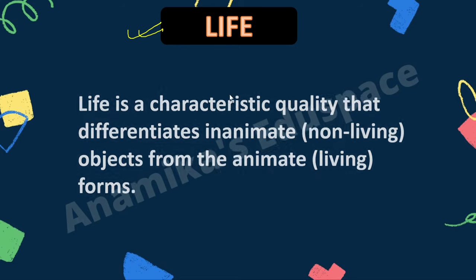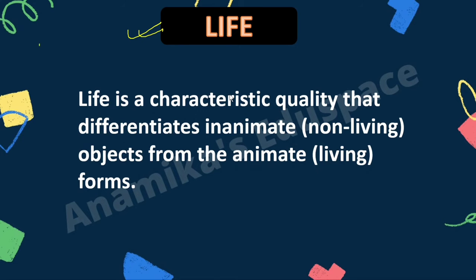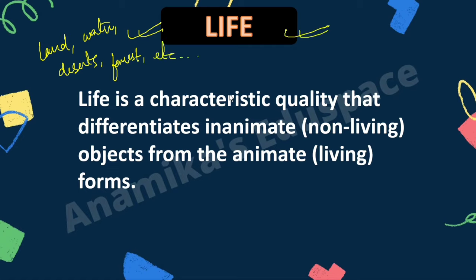In the world we live in, there are so many habitats — land, water, deserts, forests, oceans, mountains, lakes, etc. Life goes on in all of them. Different habitats are home to different organisms. These different life forms are termed living organisms or living things, and this brings about the diversity of life found on Earth.